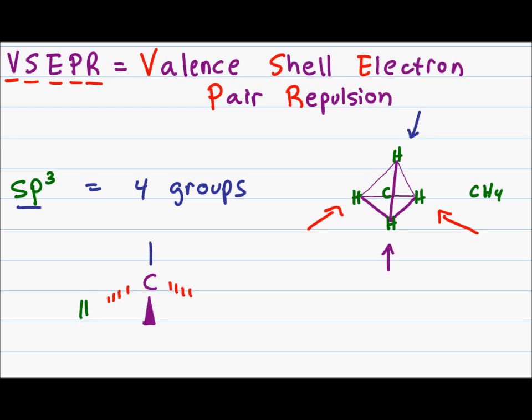This molecule here is the right way to represent a 3D molecule in organic chemistry. Once again, the thick solid wedge is coming out of the page at me. The fading dashes are going away from me into the page. The solid line represents an atom that is directly in the plane of the paper.